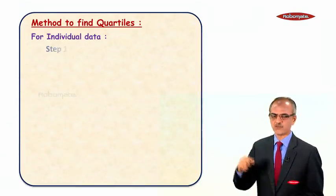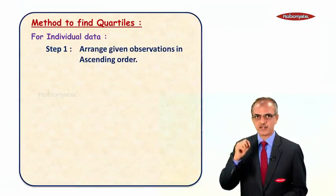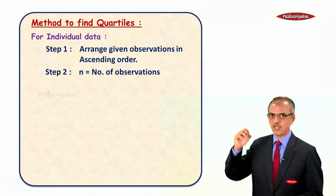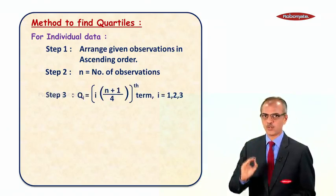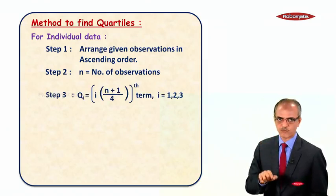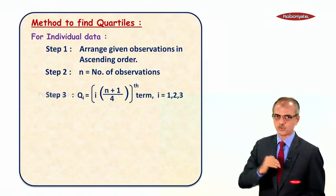Method to find quartiles for individual data. Step one: arrange the given observations in ascending order. Step two: n equals the number of observations. Step three: the formula is Qi equals i times (n+1)/4 term, where i equals 1, 2, 3.